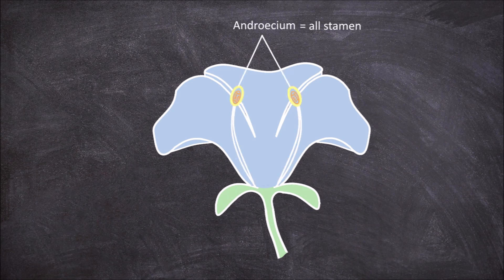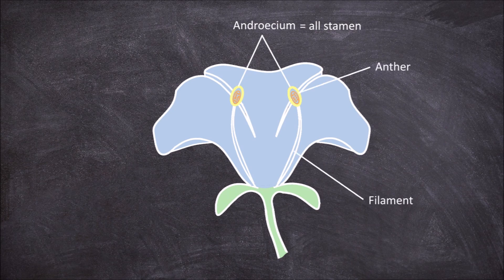The stamen itself consists of a long filament and the anther. The anther contains the pollen sacs where the pollen grains are produced.